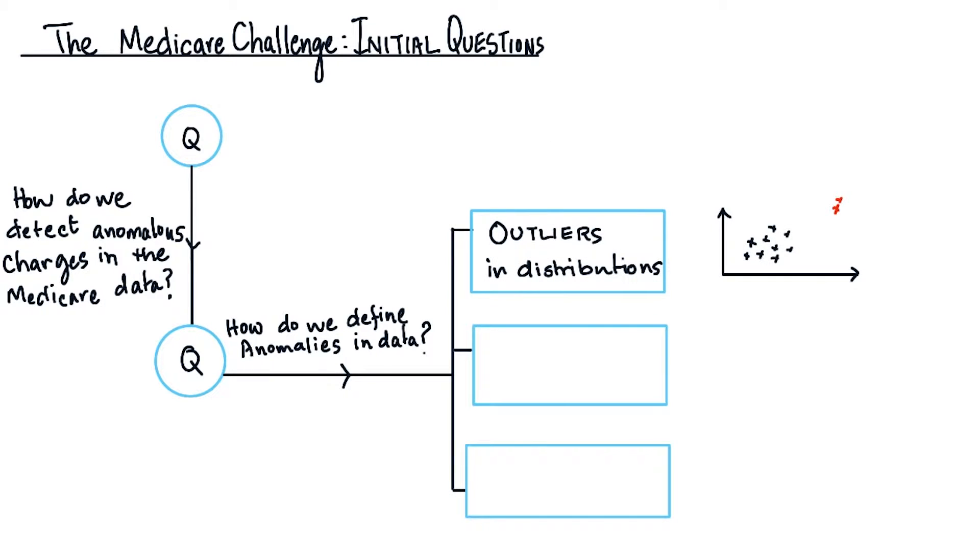To give you an intuitive understanding, if you have all your data clustered together here in one region, and you have some points far away like these red x's, we can consider the red points here as outliers. Anomalies can also show up as peaks and bumps in distributions. In this case, we can have an original distribution with a little bump in the tail here. This bump might indicate some sort of anomaly in the data.